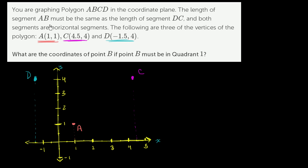Segment DC is this segment right over here. We see it's horizontal. Both of the vertical coordinates are 4 at both vertex D and vertex C.